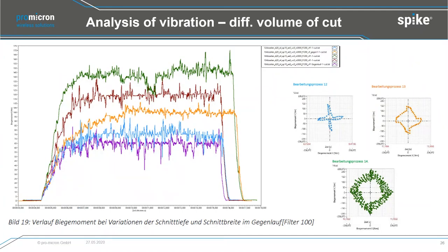Another test shows a similar effect with different AP values. By looking at force graphs with filter 100, you only see the force difference — you cannot see vibration or dynamic effects. But by looking at Spike Polar, which always shows filter 1, you can directly see the differences: the green process has the highest load but also the biggest vibration.